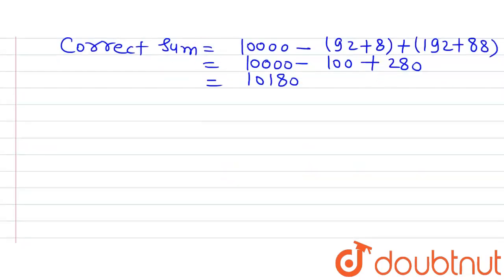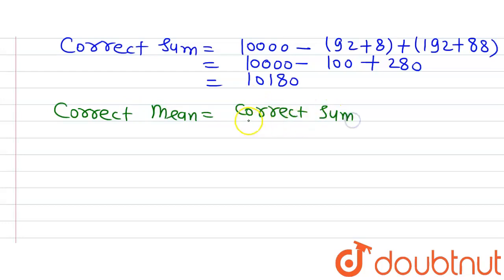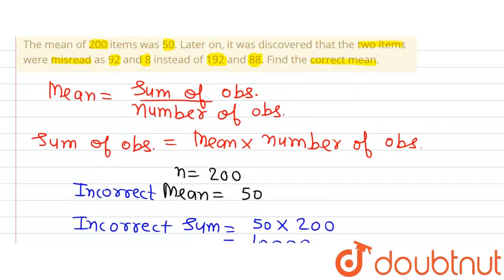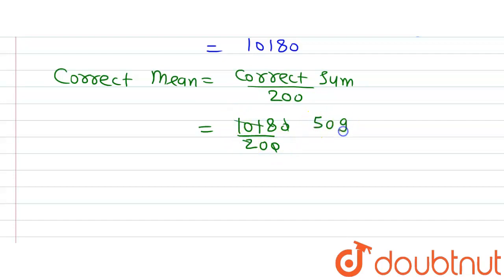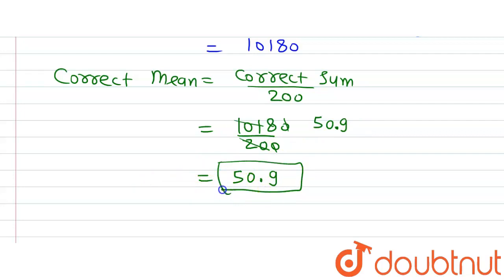Now let's find the correct mean, which we were supposed to find in this question. The correct mean equals the correct sum divided by the number of observations, so 10,180 divided by 200. Solving this gives us 50.9. So the correct mean is 50.9, and this is our answer.